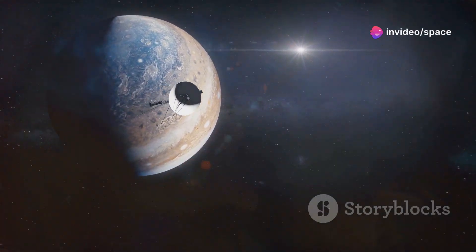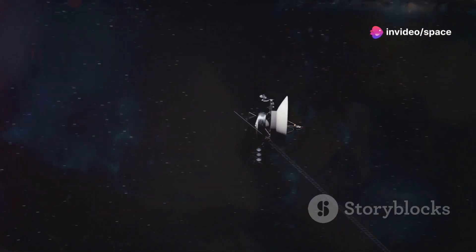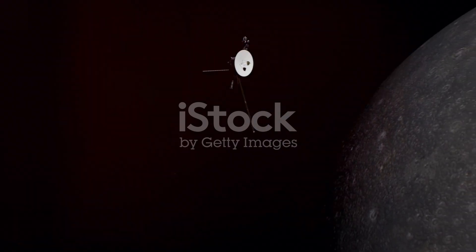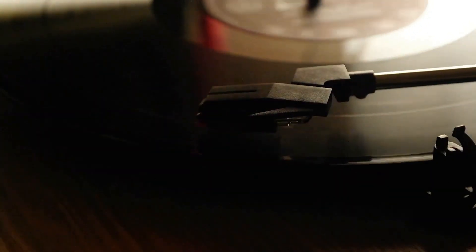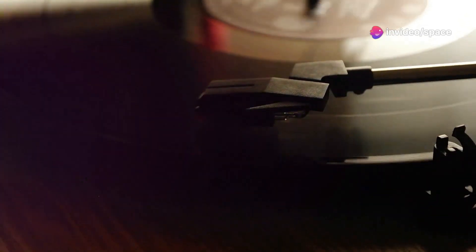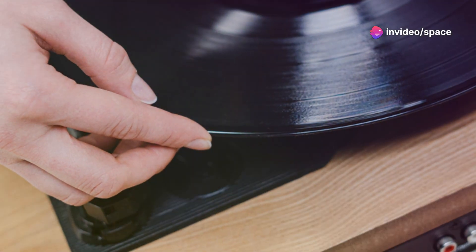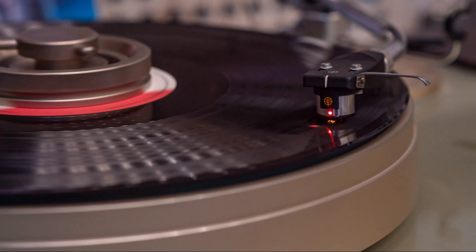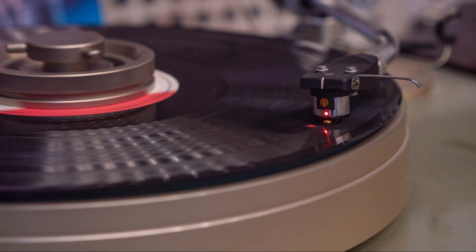That year, NASA launched Voyager 1 and 2, our robotic eyes and ears, on a grand tour of the outer planets embarking on a mission that would stretch the limits of human ingenuity and imagination. Each spacecraft carried a golden record, a time capsule of Earth's images, music, and greetings, carefully chosen to represent the diversity and wonder of life on our planet, meant for any intelligence that might one day discover it drifting through the stars.